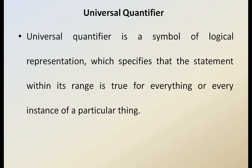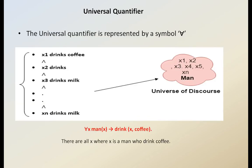The universal quantifier is a symbol of logical expression. It specifies that the statement within its range is true for everything, or every instance of a particular thing universally satisfies it. The universal quantifier is represented by the 'for all' symbol. For example, if X1 drinks coffee, X2 drinks coffee, X3 drinks coffee, and likewise Xn drinks coffee, that means all X from 1 to n men have a habit of drinking coffee.